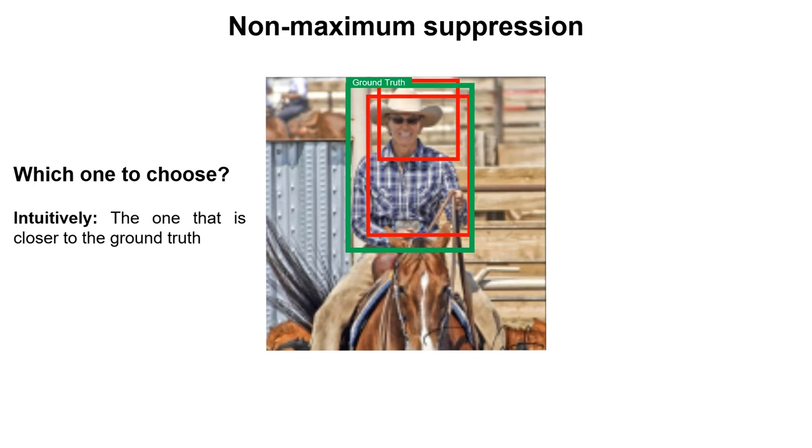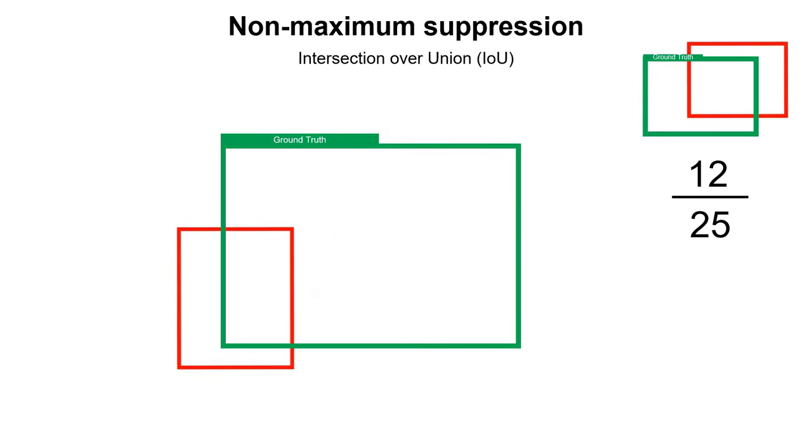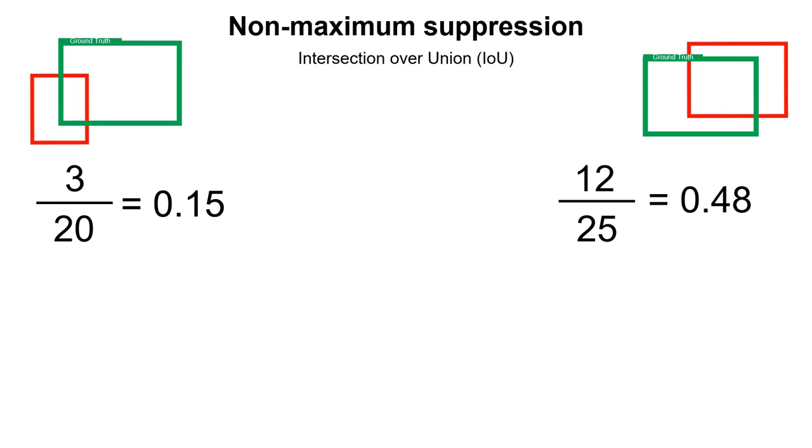Intuitively, the one that is closer to the ground truth and has more overlapping is a better candidate. So let's formalize this idea and use it to get the best option. The criterion we use to measure overlapping is called intersection over union. Let's first understand how this works by examining ground truth and this prediction. First, we compute the intersection, and let's imagine it's 12. Then we compute the union, and then we divide these two numbers. The left IOU is 0.15 and the right one is 0.48. So we say the right one is having more overlap, and we choose this and remove the left one.